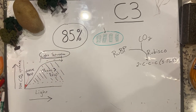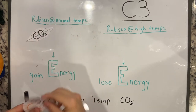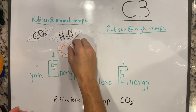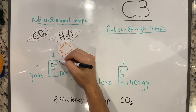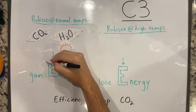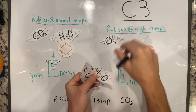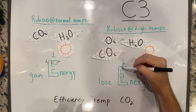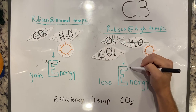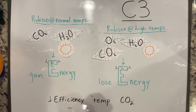There are limitations to C3 photosynthesis. Rubisco reacts with carbon dioxide, water, and light energy at normal temperatures to produce energy. However, at high temperatures, it reacts with oxygen as well, causing the organism to lose energy due to the production of non-usable products for the plant. Because of this reaction with oxygen, C3 has low efficiency at high temperatures and when carbon dioxide concentrations are low.